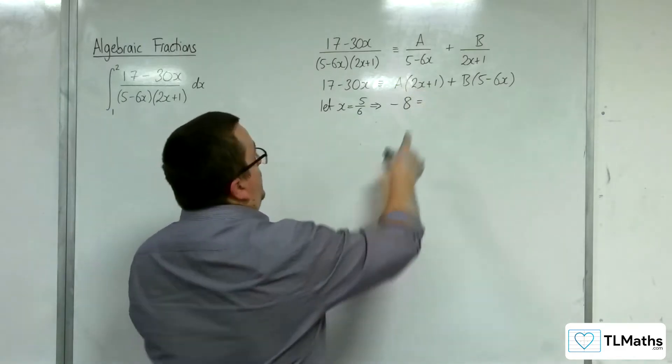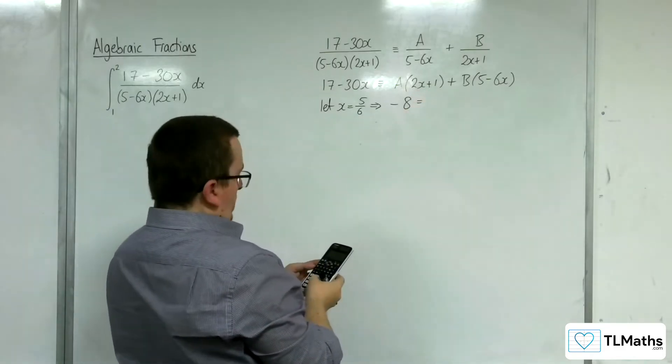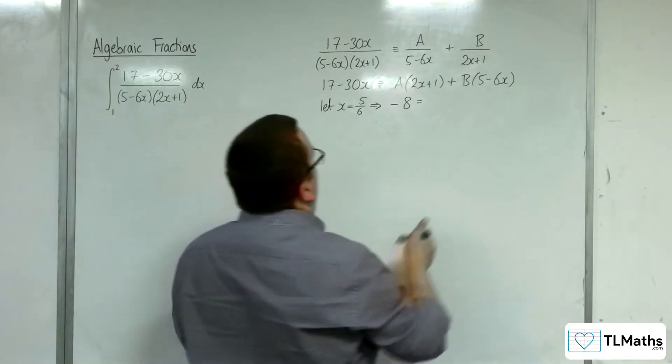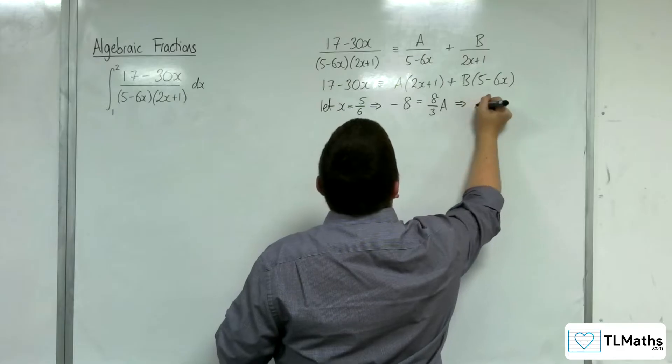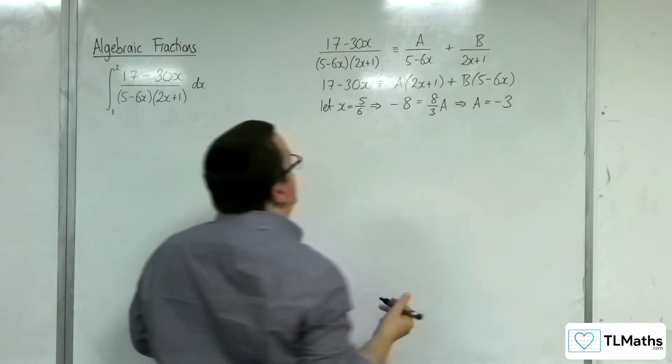And then substituting into here, we've got 2 lots of 5 sixths plus the 1 gives me 8 thirds a. So that means that a would have to be minus 3.